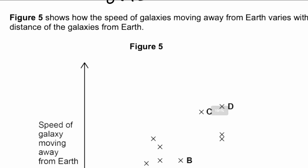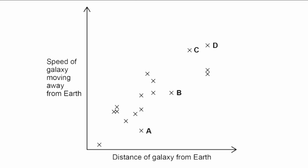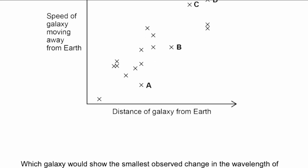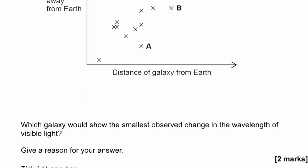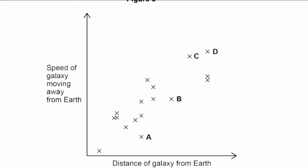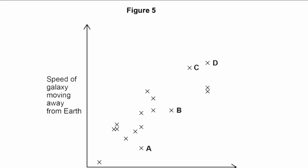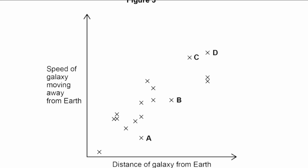Figure five shows how the speed of galaxies moving away from Earth varies with their distance from Earth. We have distance on the x-axis and recession speed on the y-axis. The question asks which galaxy shows the smallest observed change in wavelength of visible light. To answer this, we need to understand red shift: galaxies accelerate away from us, so the further away a galaxy is, the faster it moves away.